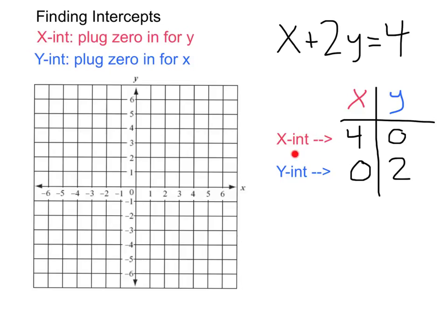And just like that, we found our x-intercept at the point four zero and our y-intercept at the point zero two. If we wanted to graph this line, all we need to do is the same thing we did when we made a table. Plot these points and connect those dots.